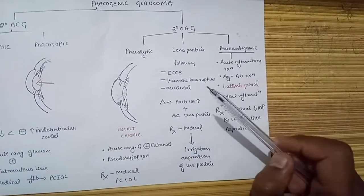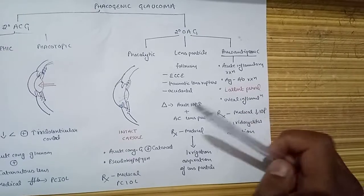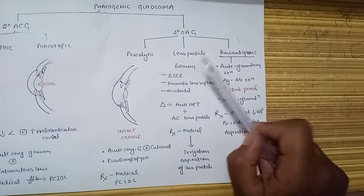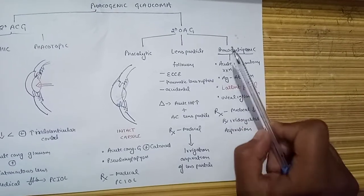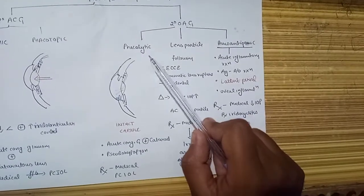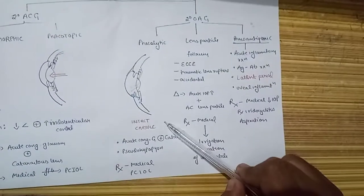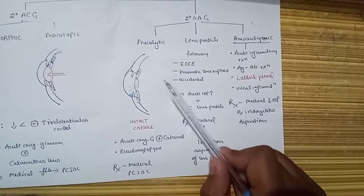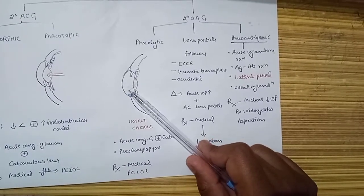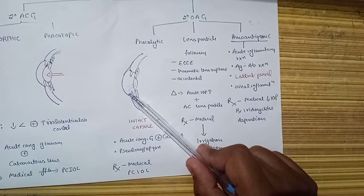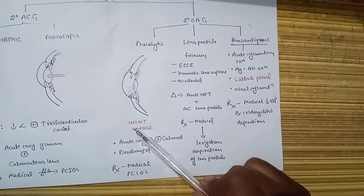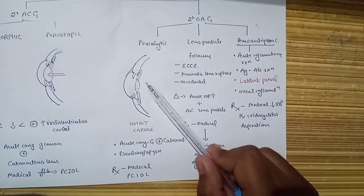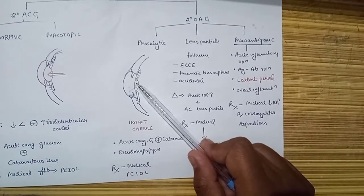Going with secondary open angle glaucoma: these are phacolytic glaucoma, lens particle glaucoma, and phacoantigenic or phacoanaphylactic glaucoma. For phacolytic glaucoma, the main point is that the capsule of the lens is intact. Here, the lens protein diffuses out from the lens and causes trabecular clogging with an intact capsule.